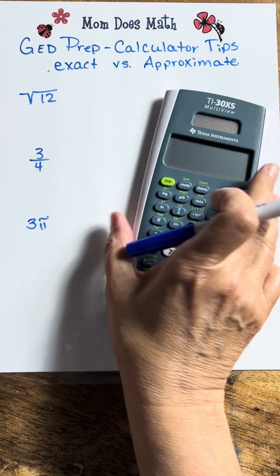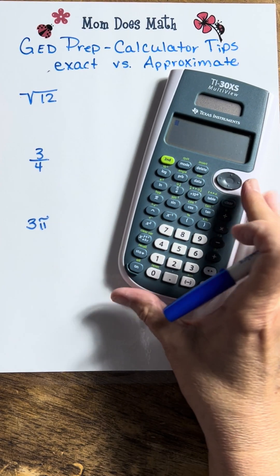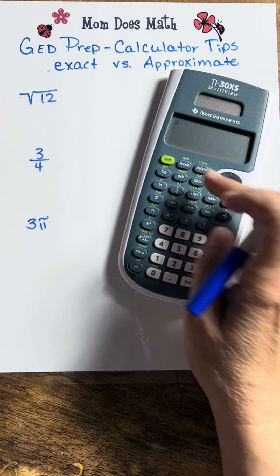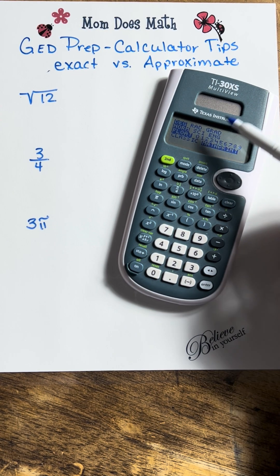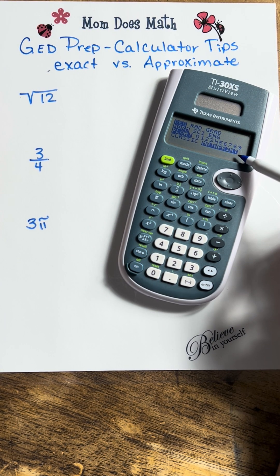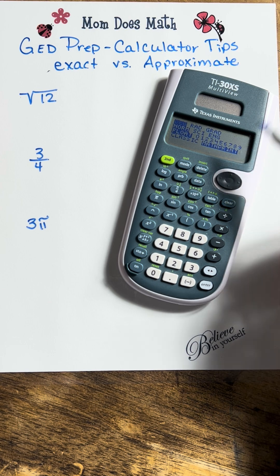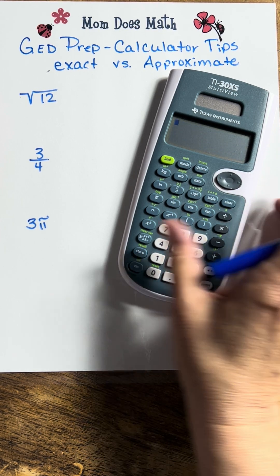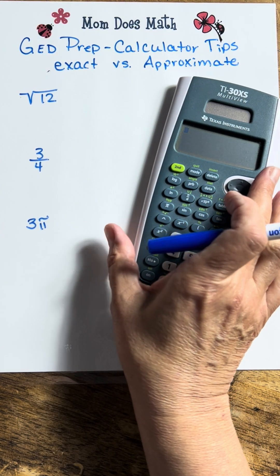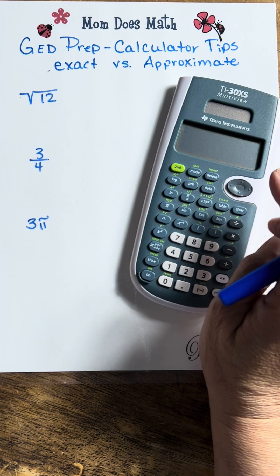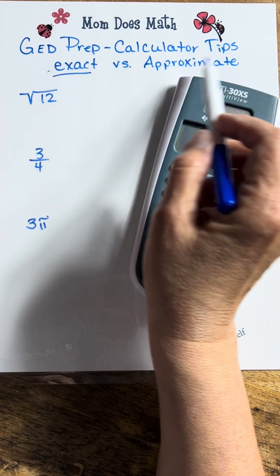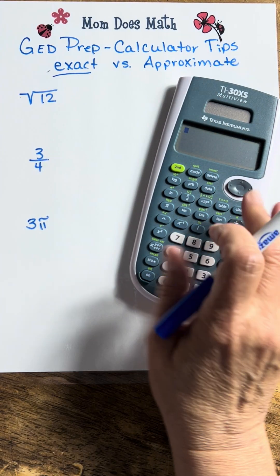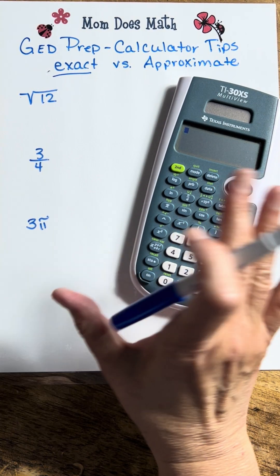This calculator is equipped with what they call math print. And if you press the mode button where it gives you all these settings, you see that math print right here is the default selection. What that means is when you put things in here, it gives you an exact answer instead of an approximate answer automatically.